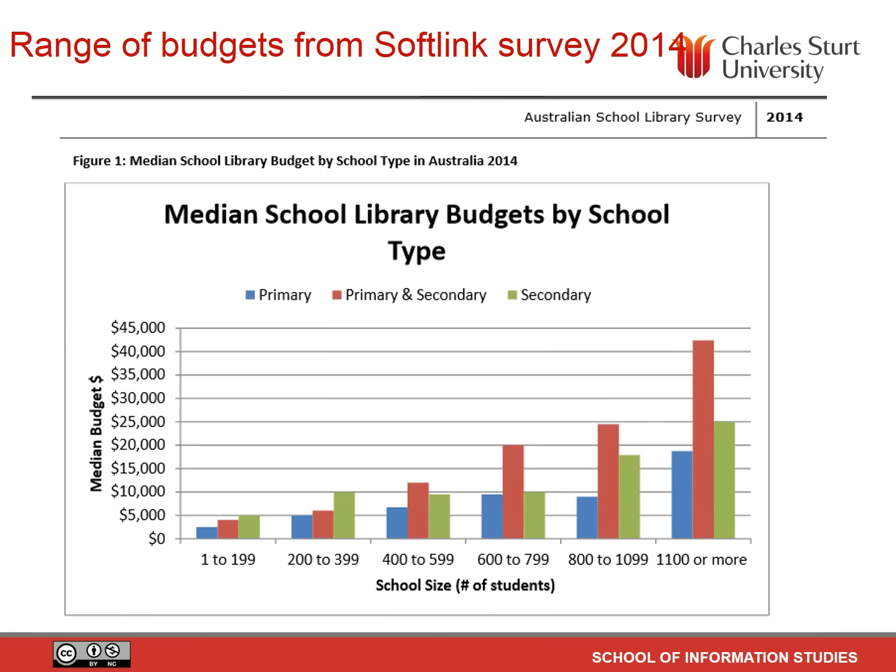Softlink Australia has been conducting annual surveys of school libraries in Australia for several years now. Softlink is the source of the library system going through DET schools in New South Wales. These surveys produce most interesting data. This particular graph shows the average budget for Australian schools in each category. It's quite clear that combined primary and secondary schools have a greater budget, which stands to reason — schools with greater numbers have more money.